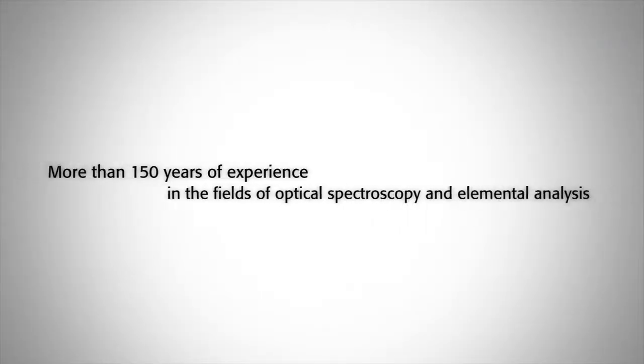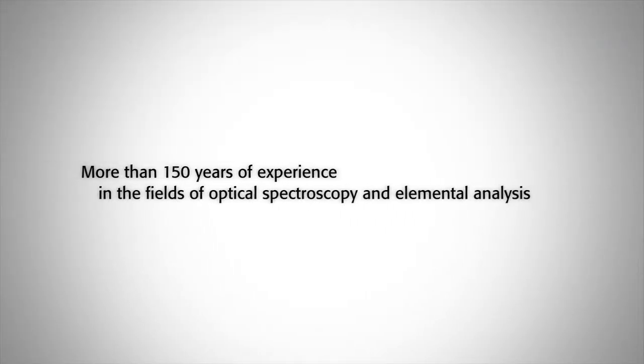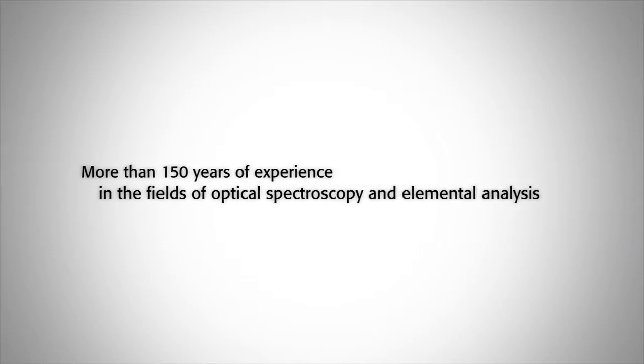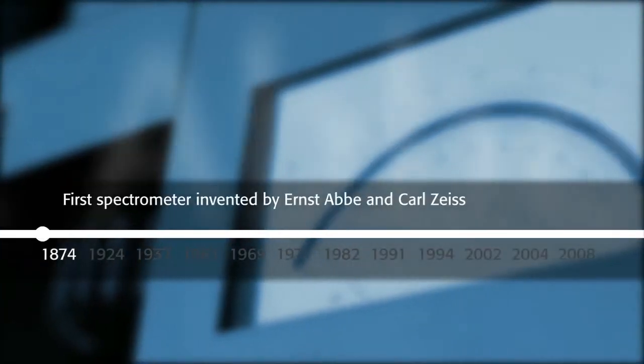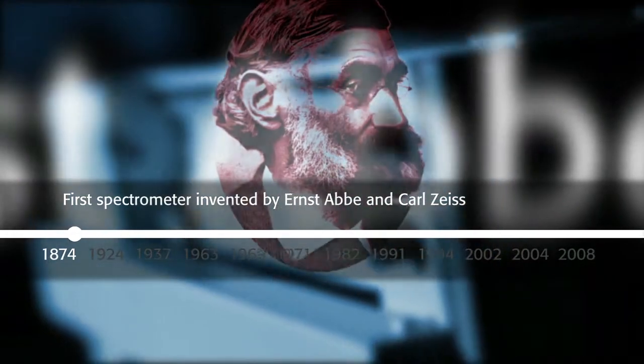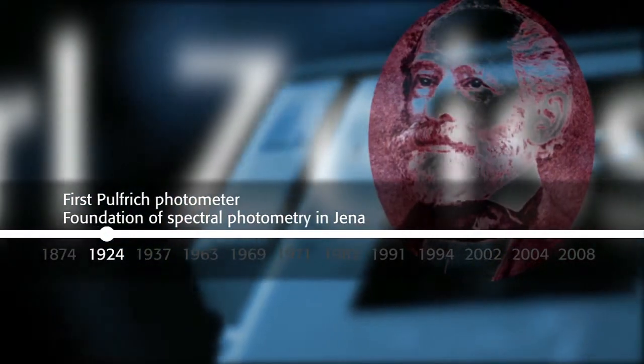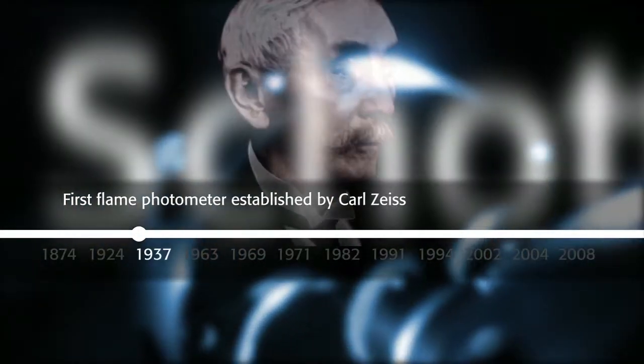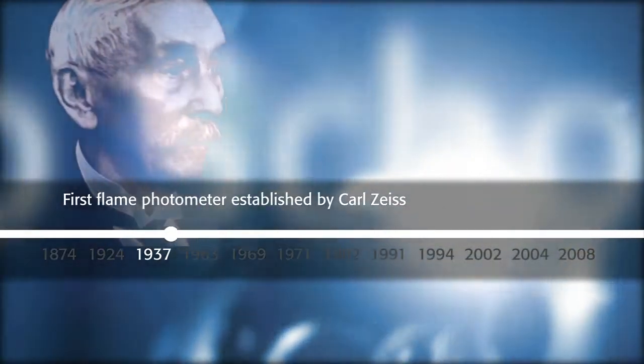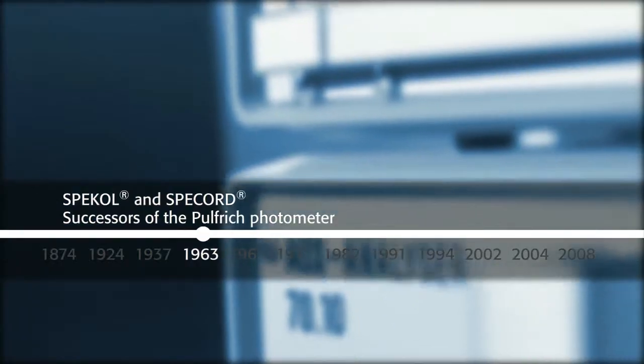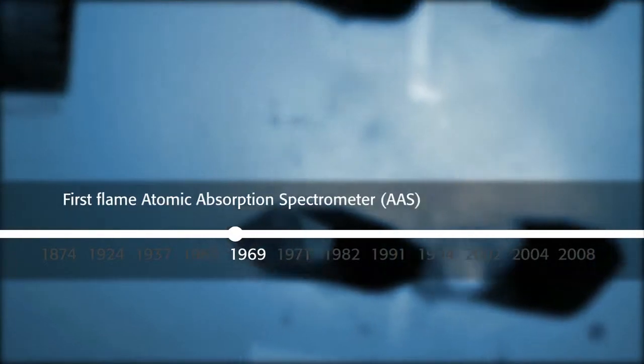More than 150 years of experience in the fields of optical spectroscopy and elemental analysis. In 1874 the pioneers Ernst Haber and Carl Zeiss introduced the first spectrometer worldwide, which laid the foundation of Analytik Jena's long tradition in developing analytical instruments of high quality and precision.